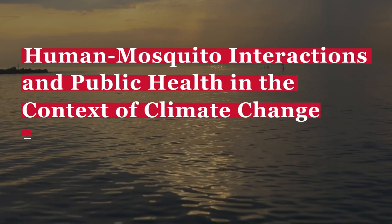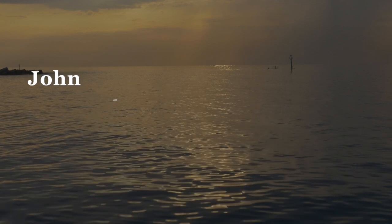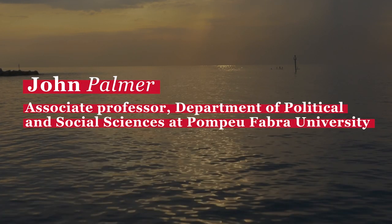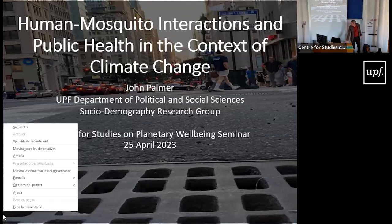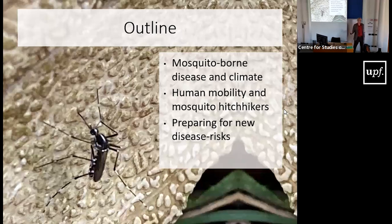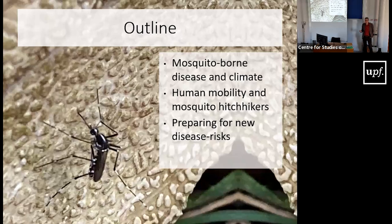Thank you very much. Wonderful to see you all. What I'm going to talk about, as Carla said, is mosquito research connected to humans and connected to climate change. The Center for the Studies of Planetary Wellbeing recently funded a big conference we held about a month ago, where we brought together about 70 researchers from all over the world to talk about urban spaces and mosquitoes in the context of climate change. The focus on urban spaces is very much intentional given the particular mosquito species we're most concerned about and how they're spreading and changing their ranges as well as changing their temporal patterns based on a changing climate.